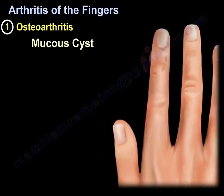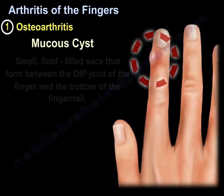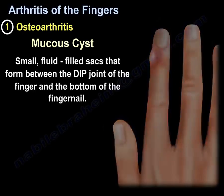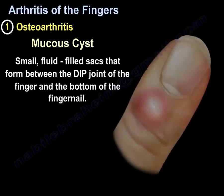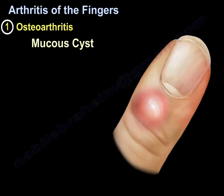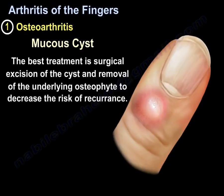Mucus cyst: small fluid-filled sacs that form between the DIP joint of the finger and the bottom of the fingernail. The best treatment of mucus cyst is surgical excision of the cyst and removal of the underlying osteophyte to decrease the risk of recurrence.